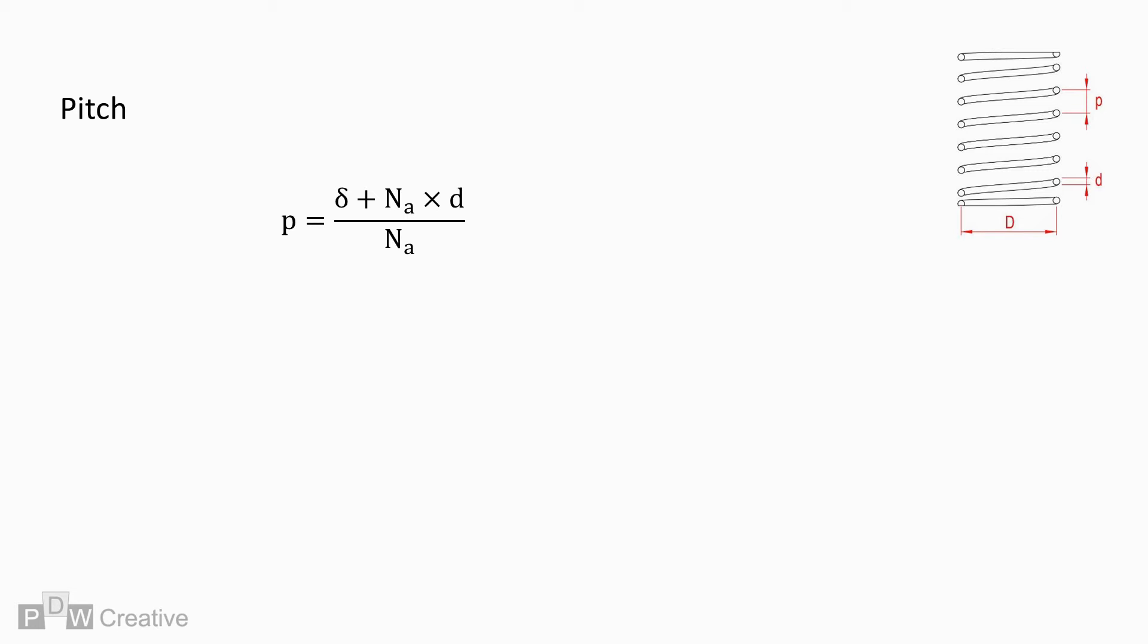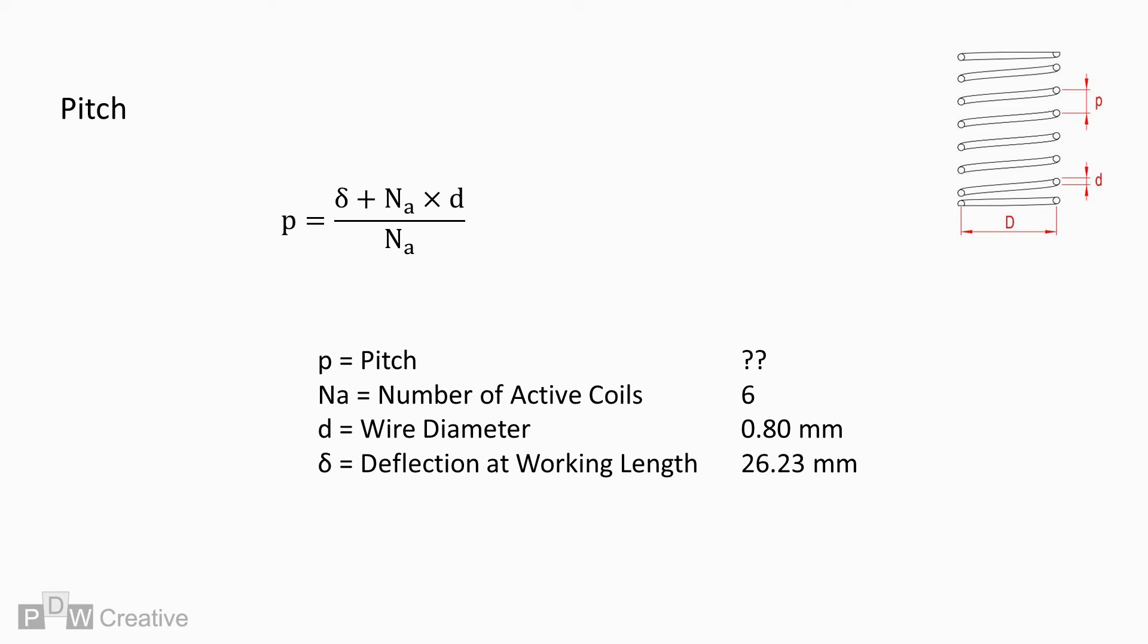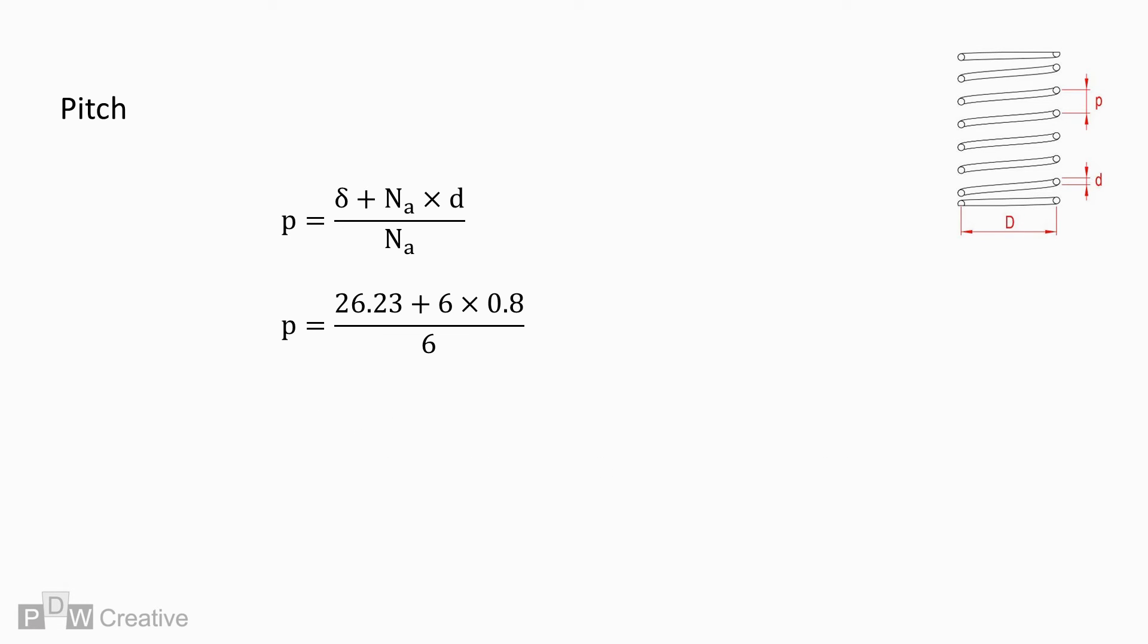Pitch is a product of deflection plus number of active coils times wire diameter over number of active coils. Active coil count being 6, wire diameter as worked out previously, and a deflection of 26.23 millimeters. And the equation gives us a pitch of 5.17 millimeters.